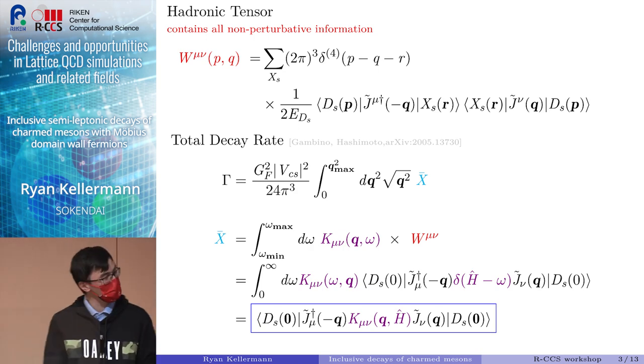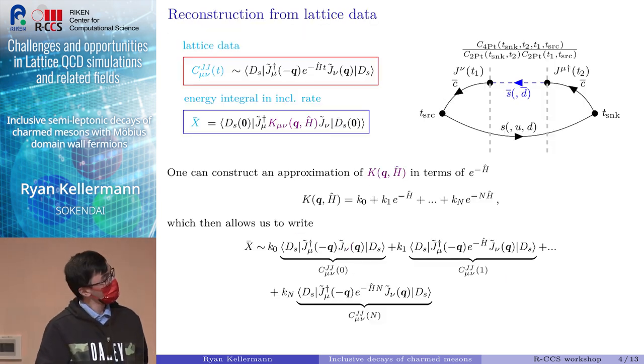In this case, we implicitly contain the integral in this matrix element where we allow all the different states to exist between the two currents. This x-bar basically becomes our gateway to calculate our total decay rate. Once we have the expression for x-bar, doing the integral over q-squared is relatively straightforward and then we can compare our results to experiments. But this expression by itself for the inclusive decay doesn't really help as much.